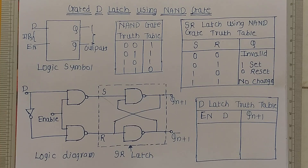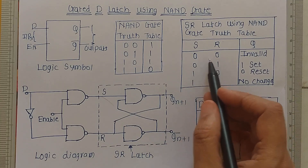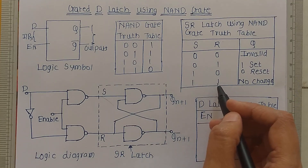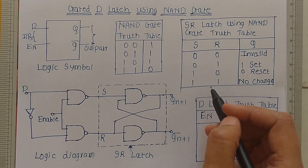The gated D latch is very similar to the gated SR latch. The only difference is that the input conditions where S equals zero and R equals zero, and where S equals one and R equals one, are not present in the gated D latch.